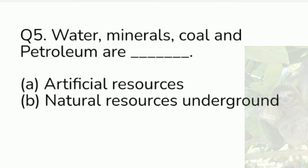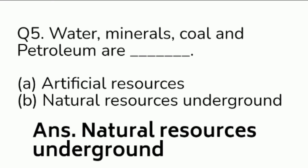Question number 5. Water, minerals, coal, and petroleum are examples of — Option A: artificial resources. Option B: natural resources, underground. Answer is Option B, natural resources, underground.